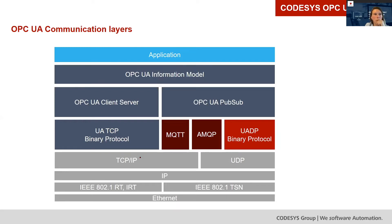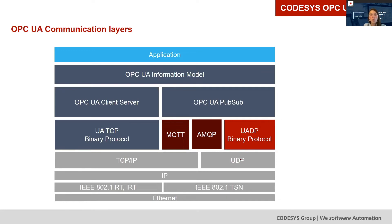Client and server are typically set up to communicate with visualization — for instance, with a third-party visualization. And OPC UA PubSub can be done via different protocols: via MQTT, via AMQP, and via the UADP protocol. What we have actually done is PubSub via this UDP protocol.